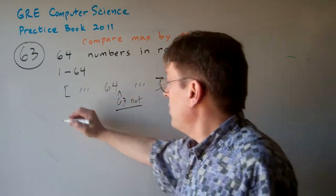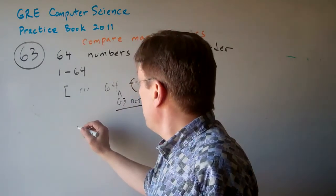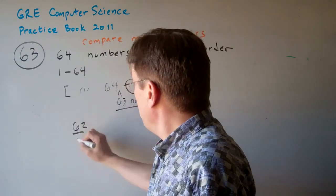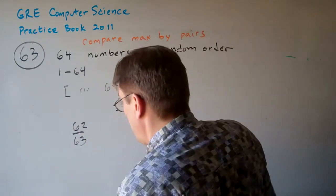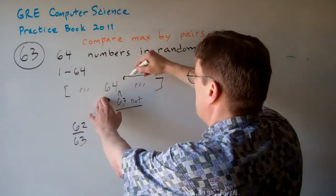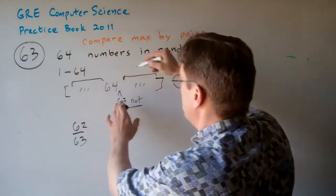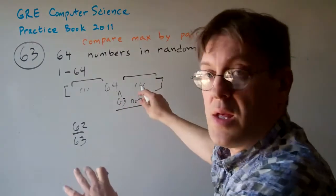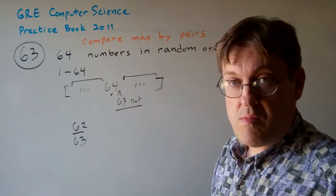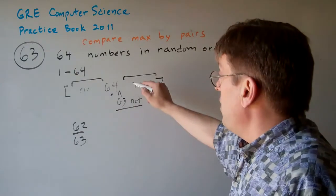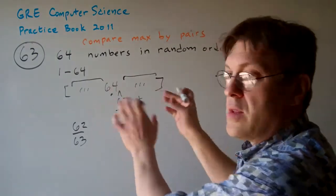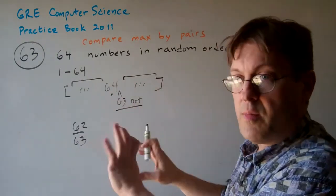63 can't be right next to it. So the probability is basically 62 out of 63. So basically there's 62, sorry, there's 63 spots in this array that are not where 64 is. There's one spot that's next to 64 because it's pairwise, it'll be either in front or behind it, but it doesn't really matter.